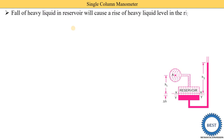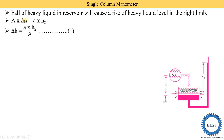Now we derive the equation for the single column manometer. The fall of heavy liquid in the reservoir causes a rise of heavy liquid in the right limb. The volume displaced in the reservoir equals A times delta H. The volume rise in the right limb equals a times H2. Equating these, delta H equals (a × H2) / A. This is equation number one. Now consider datum line Y-Y.